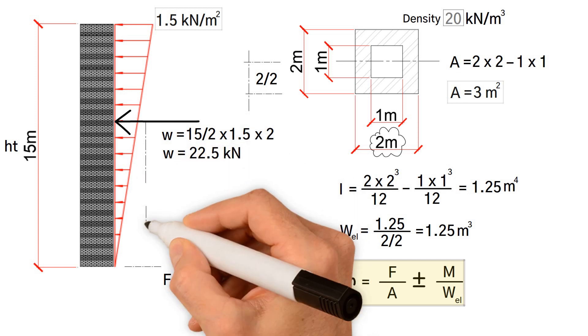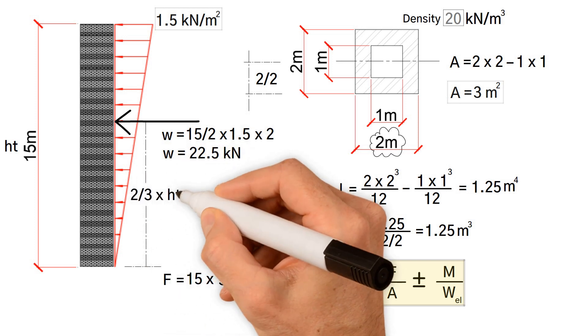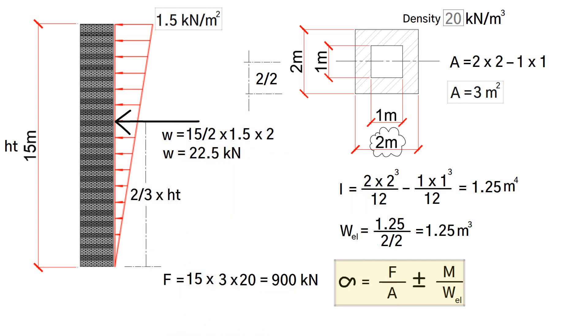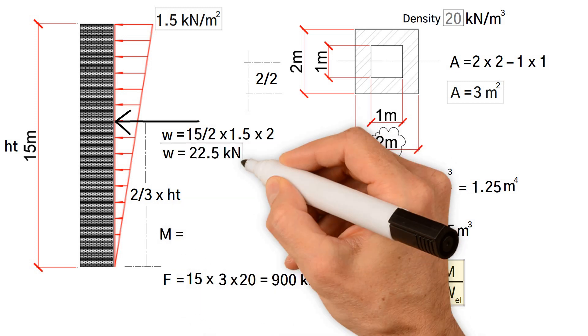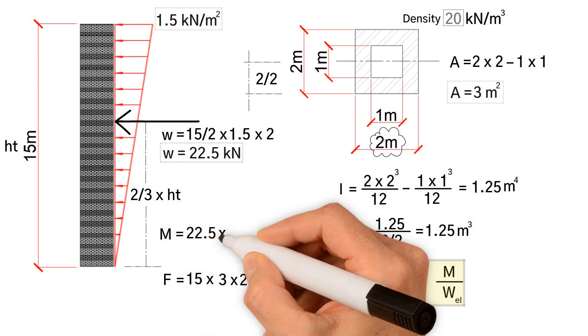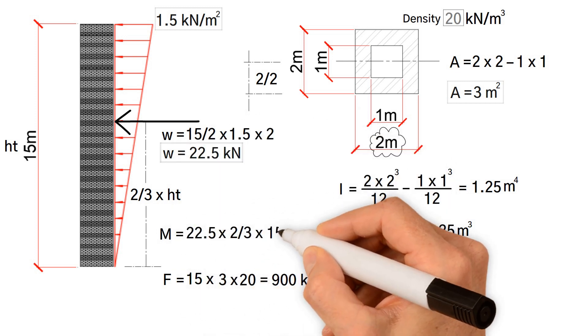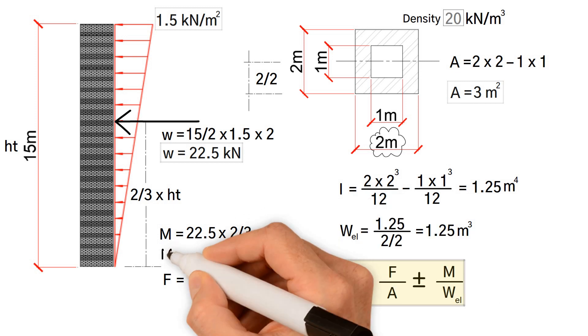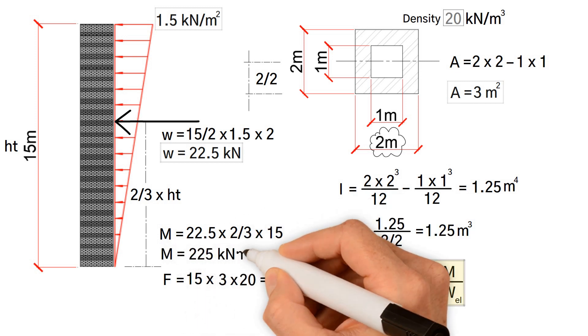However, the resultant force acts two-thirds of height up the chimney. So, the overturning moment equals 22.5 kilonewtons multiplied by two-thirds of 15 meters. This gives us a value of 225 kilonewton meters.